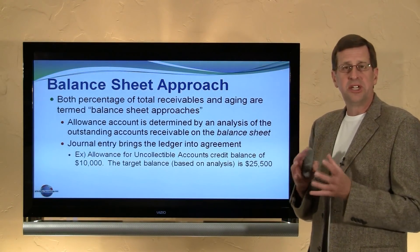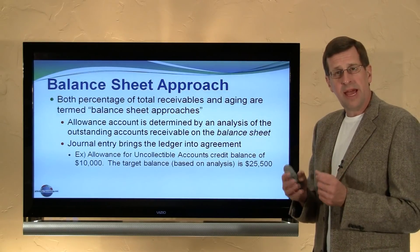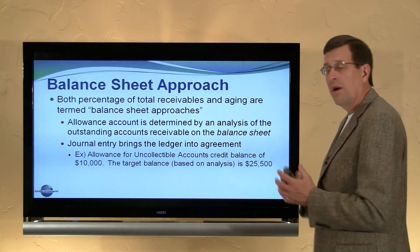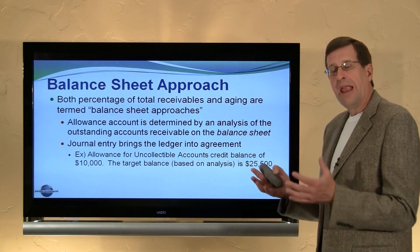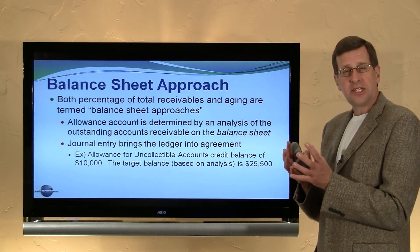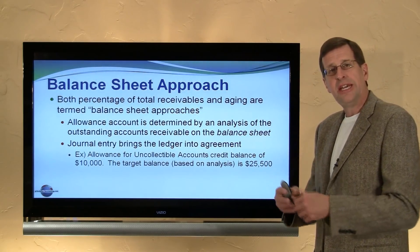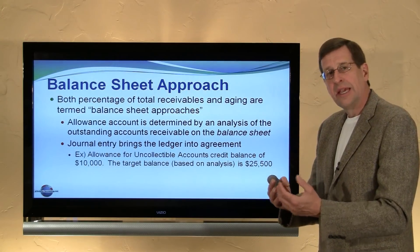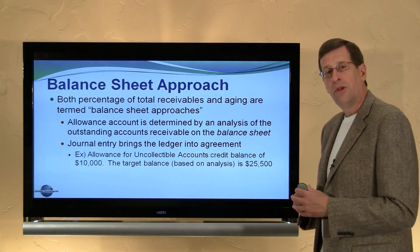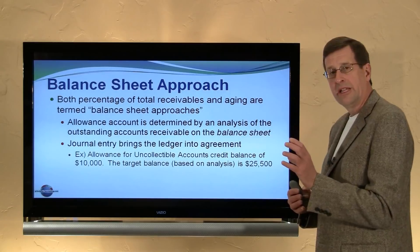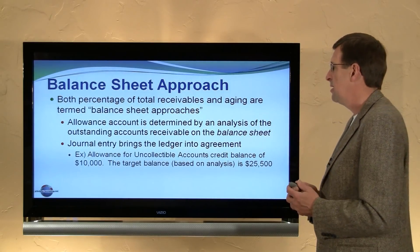Now, both of these approaches — whether it's a percentage of the total outstanding accounts receivable on the balance sheet, or via an aging — are termed balance sheet approaches. We've looked at the outstanding accounts receivable on the balance sheet and done some analysis to determine what portion we think will not prove to be collected. We're looking at the balance sheet and deriving an estimate of the uncollectible.